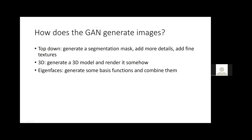Maybe the GAN uses some basis functions combined similarly to the Eigenfaces concept. The answer is that the GAN does not really generate images in an easily human-understandable manner. Looking at all the intermediate information the GAN processes, it is not simple to come up with editing operations that work really well — however, you can still get editing operations that work much better than people expected just a few years ago.